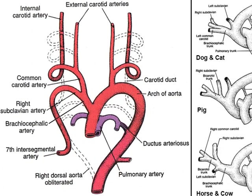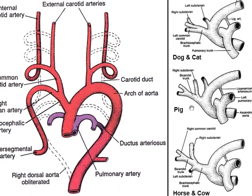This is illustrated on the right, where we see different patterns of formation for different species. In the horse and cow, there is one brachiocephalic trunk from which both subclavian and both common carotid arteries are given off. In the pig, the two common carotids come together forming a bicarotid trunk. In the dog, this region forms one brachiocephalic trunk, with the left subclavian artery coming off secondly. The point is that it is not surprising to see different patterns in these major vessels anterior to the heart.